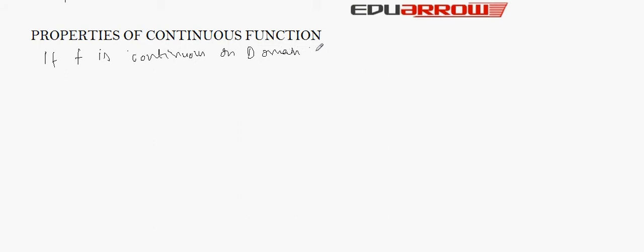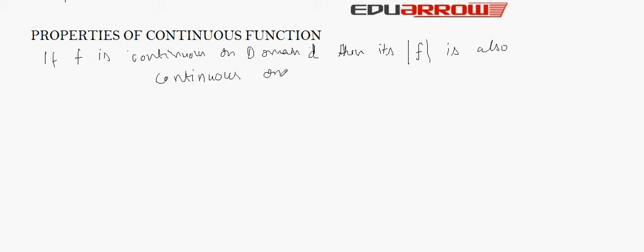The second property says that if a specific function f is continuous on domain d, then its modulus — that is, |f| — is also continuous on d.